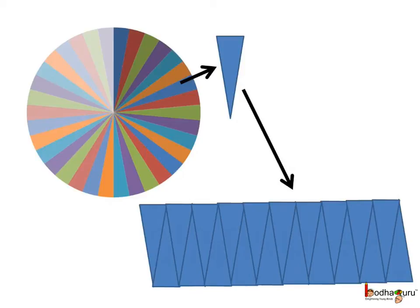Now, if we keep all the pieces of the cake like this on a tray, then look, all the pieces are forming a rectangle.